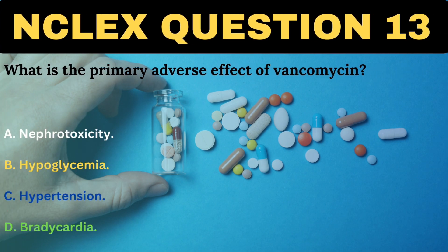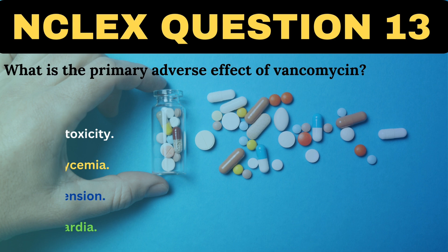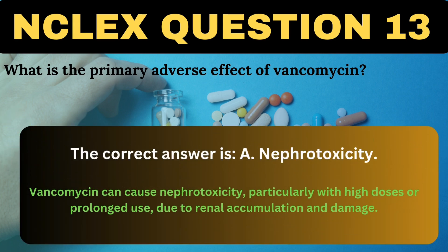What is the primary adverse effect of vancomycin? A. Nephrotoxicity. B. Hypoglycemia. C. Hypertension. D. Bradycardia. The correct answer is A, Nephrotoxicity. Vancomycin can cause nephrotoxicity, particularly with high doses or prolonged use, due to renal accumulation and damage.